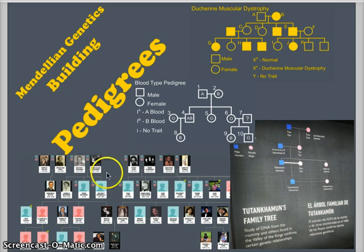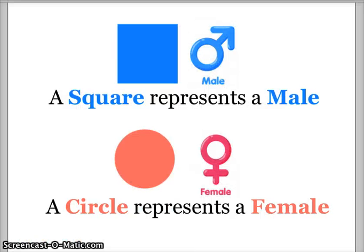So let's look at how to build a pedigree. In a pedigree, all of the squares represent males and all of the circles represent females. So a square is a male, a circle is a female.